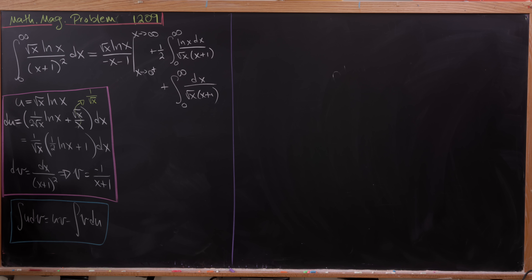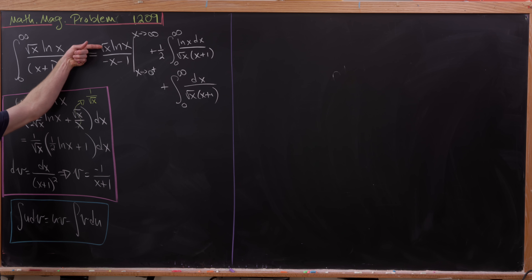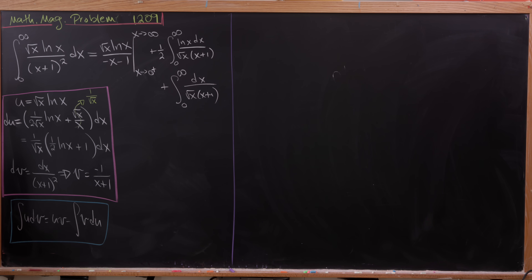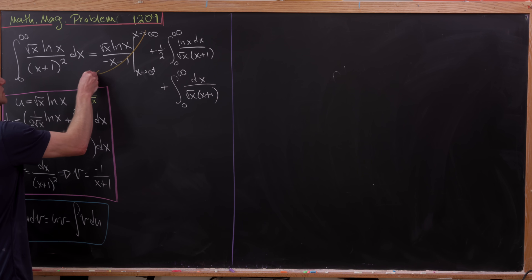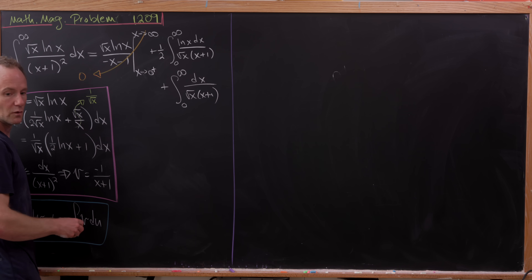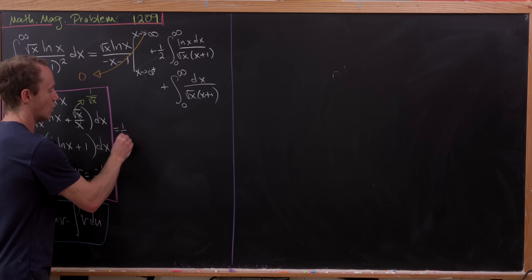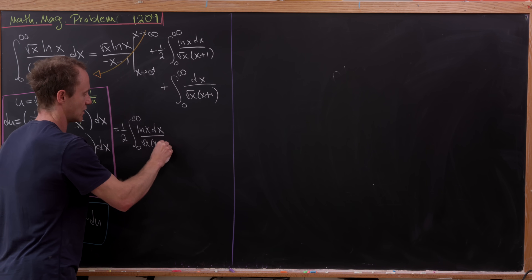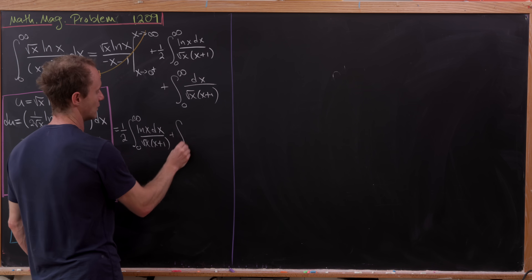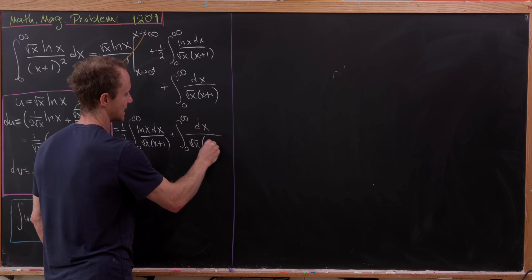Now let's take care of the boundary term. As a homework exercise, you can verify that as x approaches 0 from above, the term √x · ln(x) / (x+1) goes to zero — the numerator goes to zero and the denominator goes to −1, which you can see using L'Hôpital's rule. Likewise, you can use L'Hôpital's rule on the limit at infinity to show that term also goes to zero. So this boundary term simply disappears, and we're left with the two integrals: ½ ∫₀^∞ ln(x) dx / (√x · (x+1)) plus ∫₀^∞ dx / (√x · (x+1)).